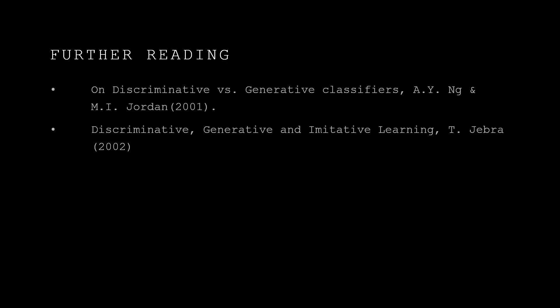If you want to dive deep into this from an academic standpoint, there are two resources — actually one paper and one PhD thesis — which I'll include a link to. The first is a paper on discriminative versus generative classifiers, and the second is a PhD thesis which examines the three categories of discriminative, generative, and imitative. I mentioned at the start there is this additional category called imitative, though I'm not sure how widespread its use is.